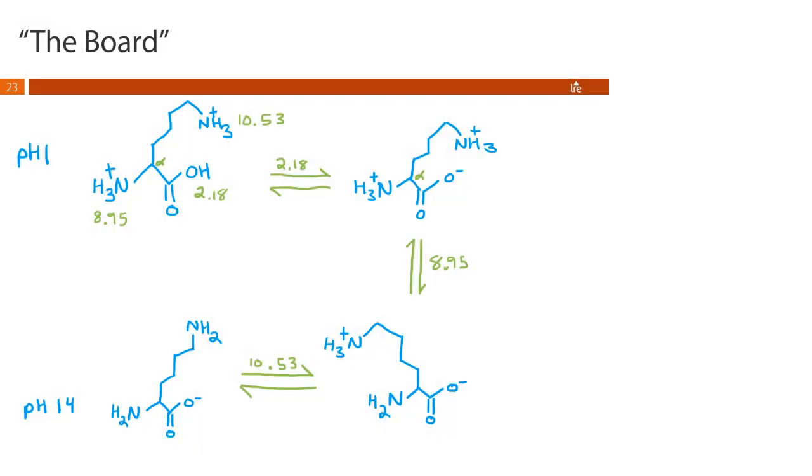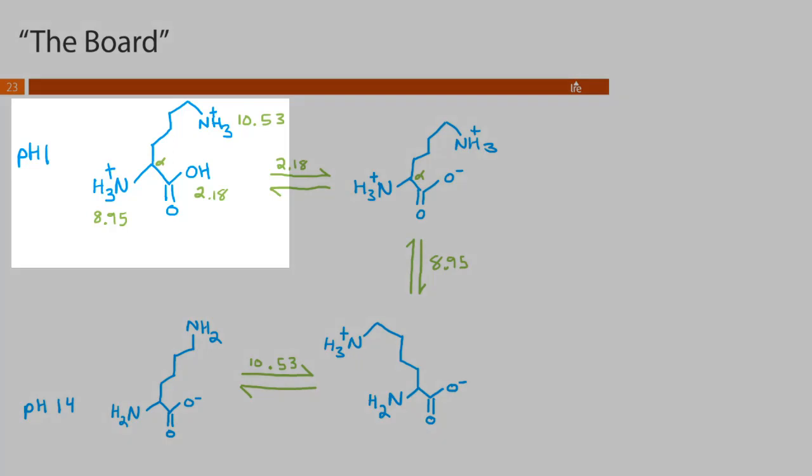Okay so go ahead and pause the video if you haven't already and identify the net charge for all four of these species. Okay so this first one right here at super low pHs we're gonna have two positively charged groups and a neutral group so we have a net charge of plus 2. The second species we have two positive and one negative so 2 minus 1 equals a positive 1.